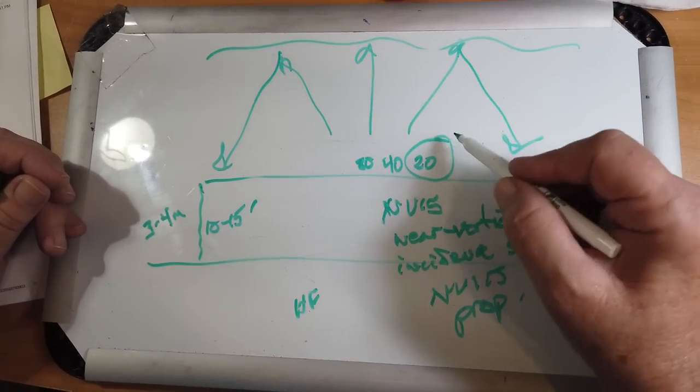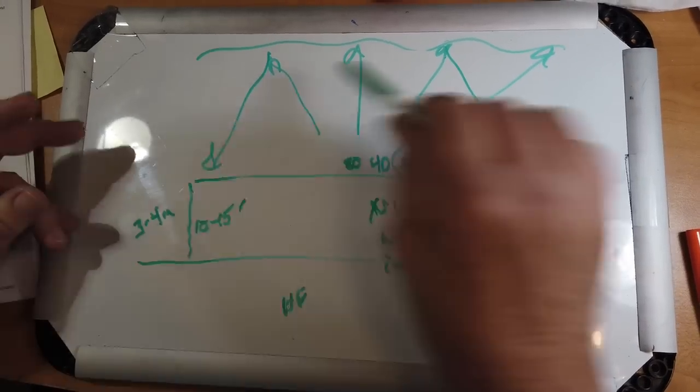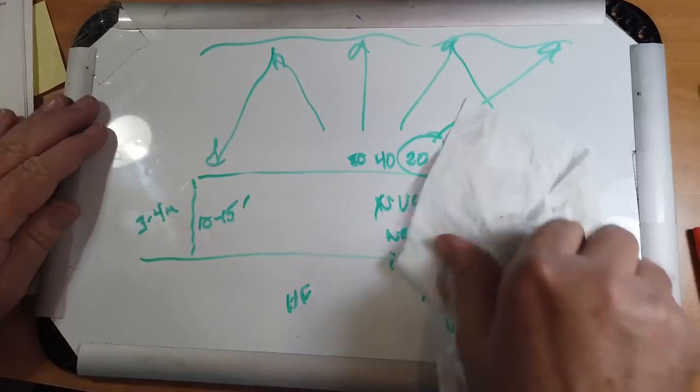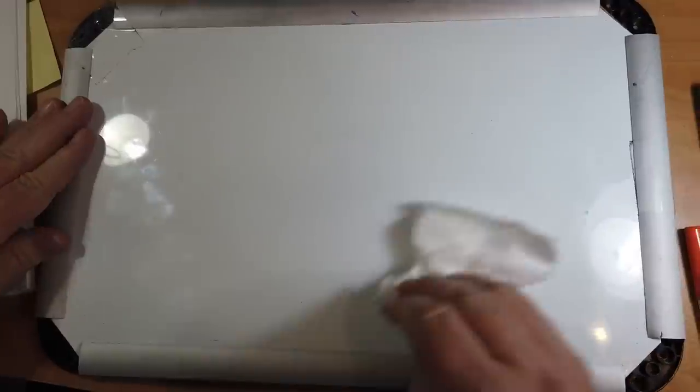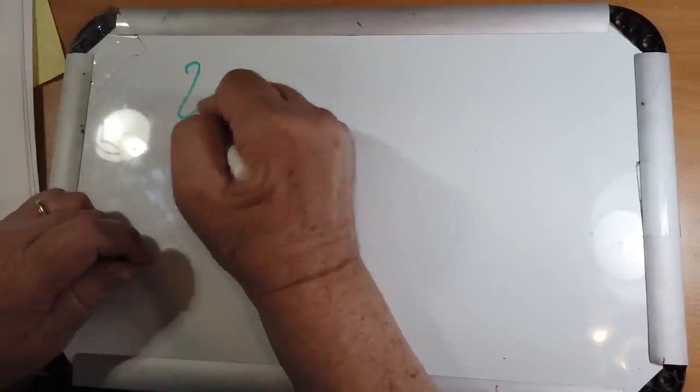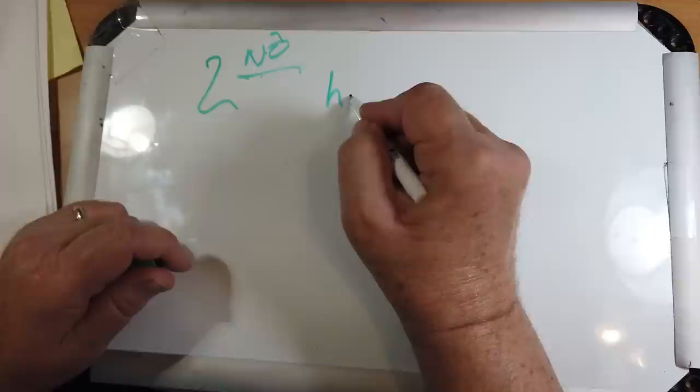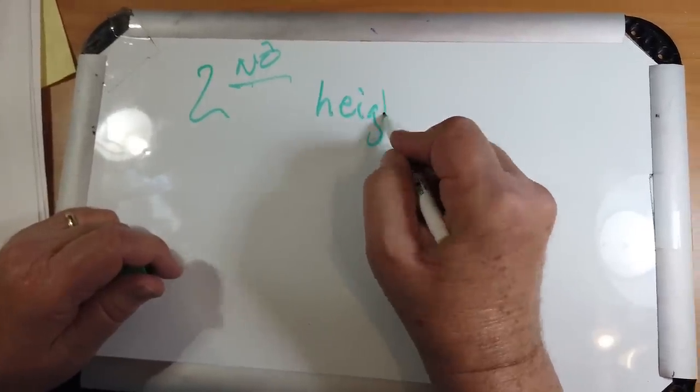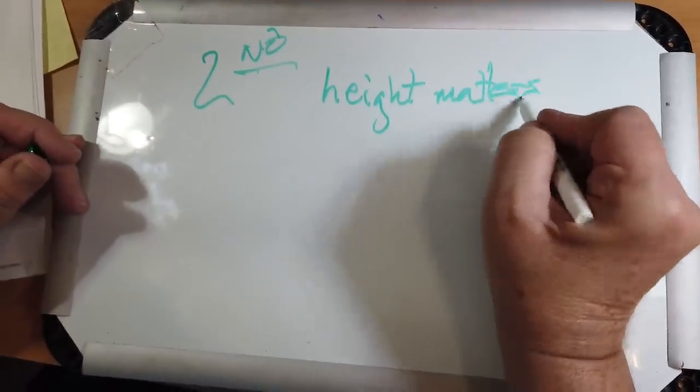Now, 20 wants a more oblique angle. So you're going to get a really weird pattern on 20. Now, remember the second rule of antennas: height matters.